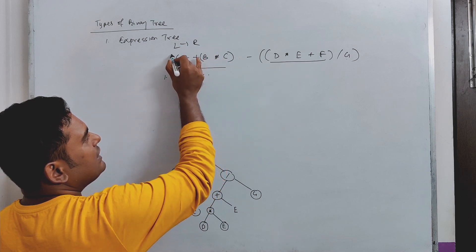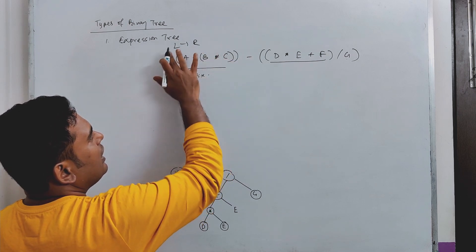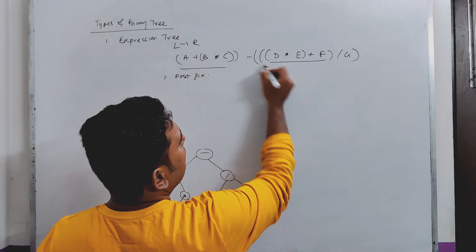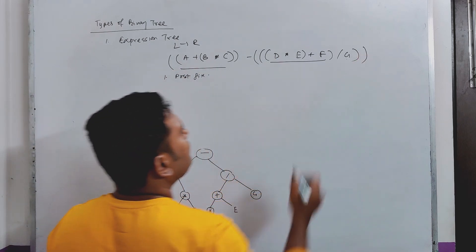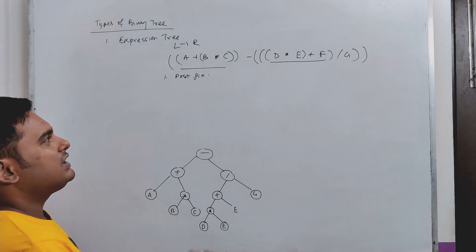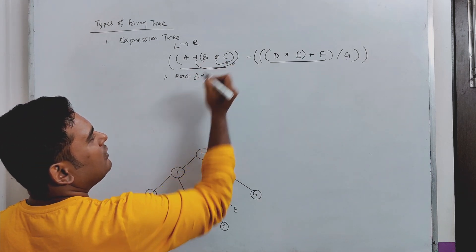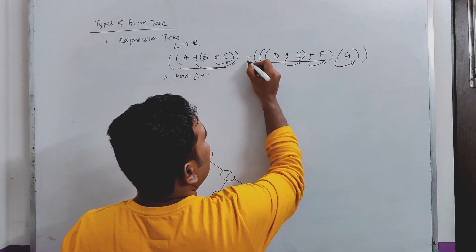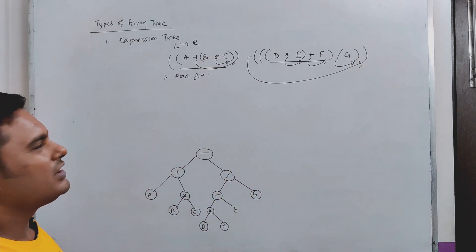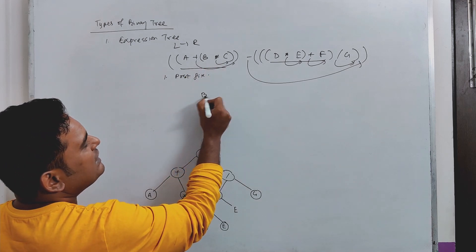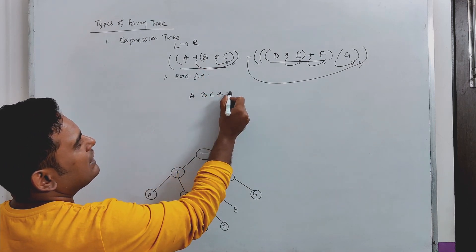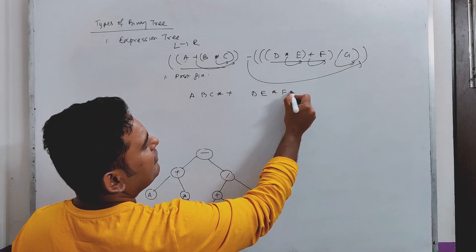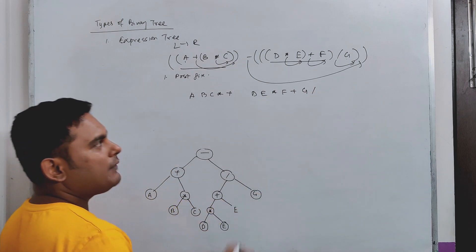We fully parenthesize the expression. Then, replacing the rightmost parenthesis with the operator gives us the postfix. The postfix expression is: A, B, C, star, plus, D, E, star, F, plus, G, by, minus.